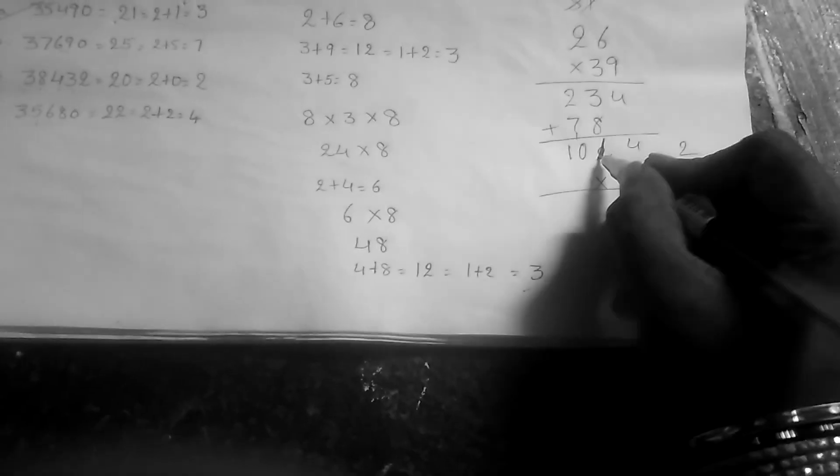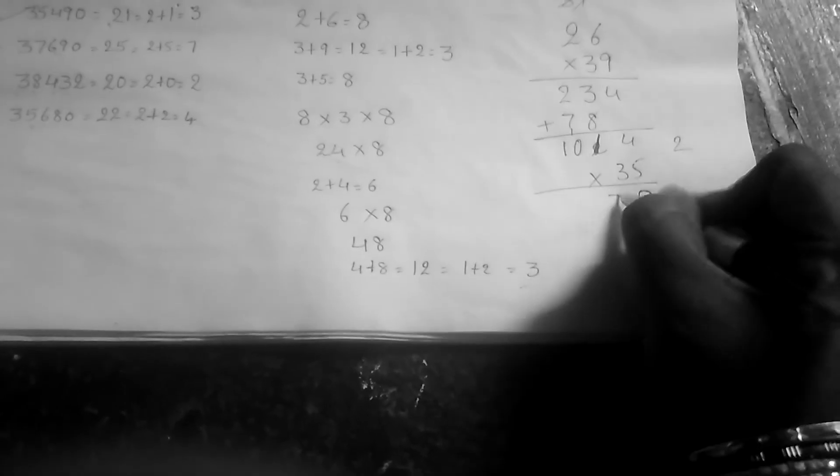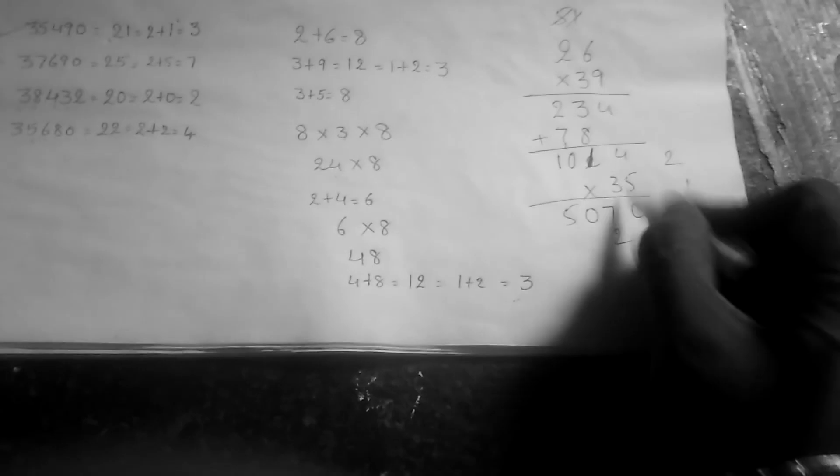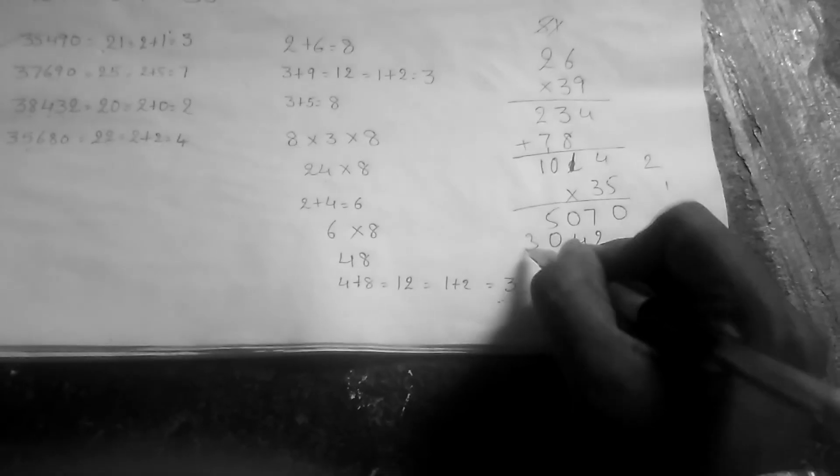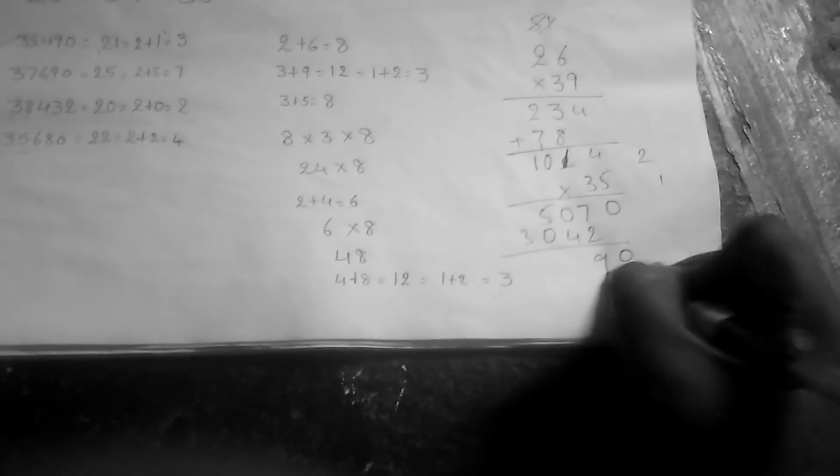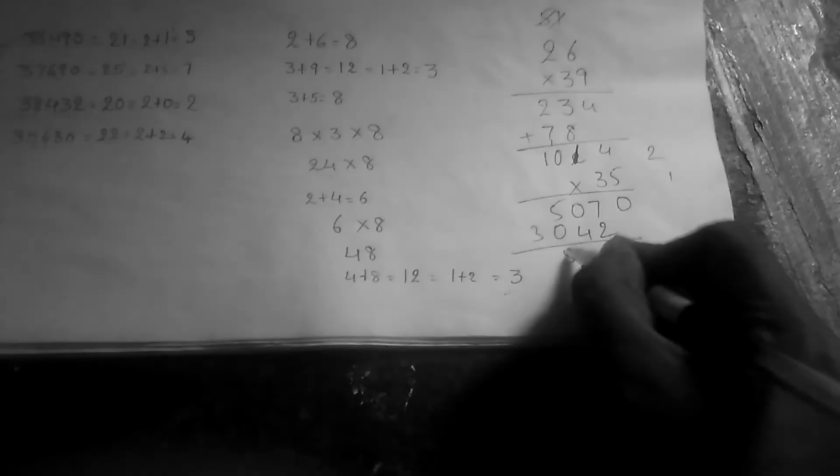After that, you have to multiply by 35. 5 times 4 is 20, write 0 and carry 2. 5 times 1 is 5 plus 2 is 7. 5 times 0 is 0. 3 times 4 is 12, write 2 and carry 1. 3 times 1 is 3 plus 1 is 4. 3 times 0 is 0. This gives us 35,490.